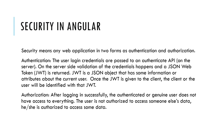So how can we provide security in Angular? Security in web applications comes in two forms: authentication and authorization. For authentication, user credentials are passed to an authentication API; on the server side, credentials are validated and a JSON Web Token (JWT) is returned. A JWT is a JavaScript object containing information or attributes about the current user. Once the JWT is given to the client, the user is identified by the JWT.